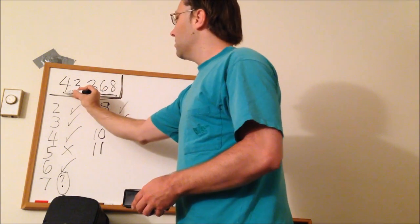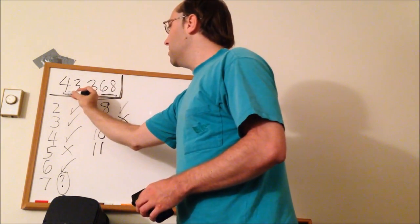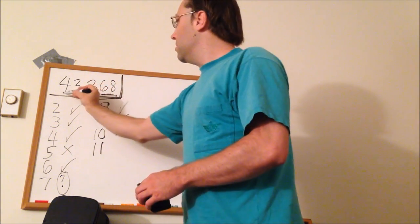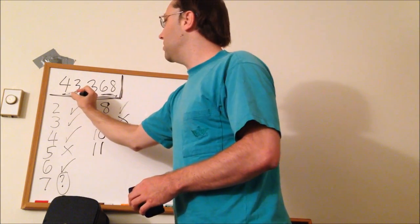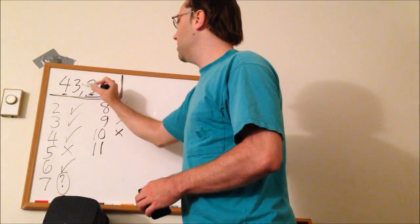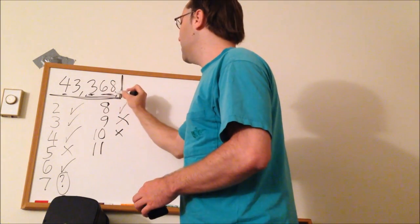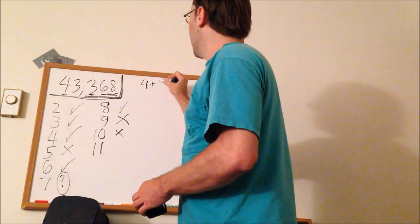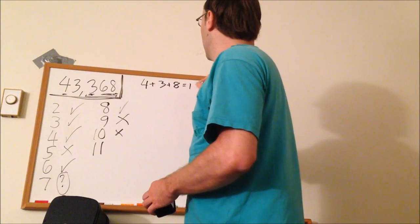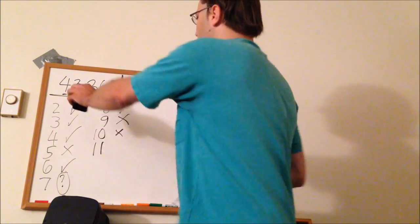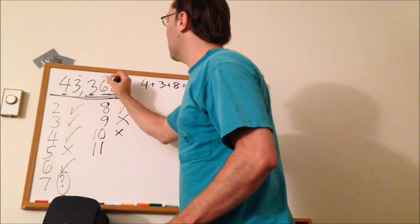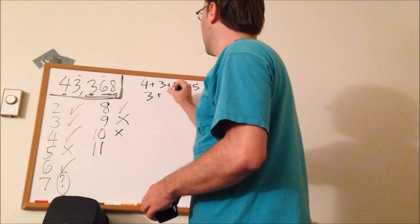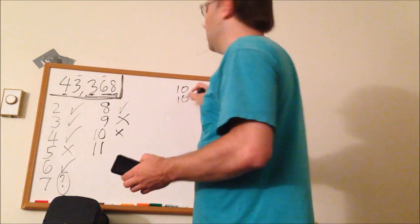Now, 11, the rule is actually kind of simple once you get it. You add the values of the odd number of digits. So you add the first digit, which is a 4. The third digit, which is a 3. You skip over the second digit. And the fifth digit. 4 plus 3 plus 8 is 15. So let's jot that down.